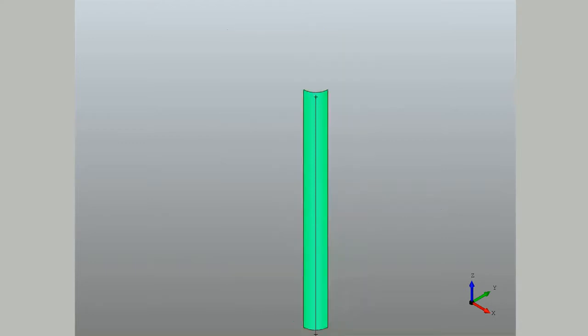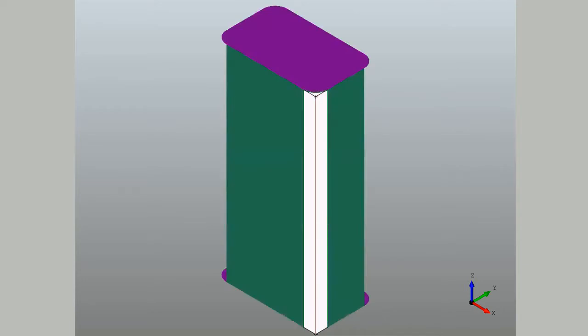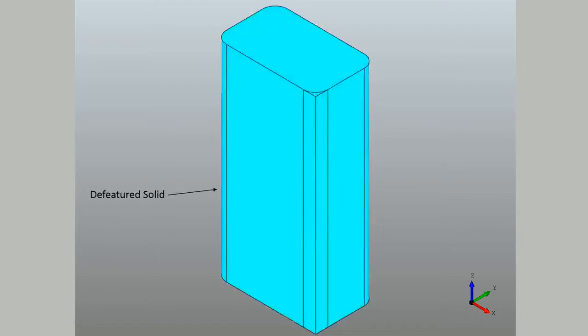Next, the extended faces are created using the corner edge and the neighboring edges. And finally, the shell obtained from the extended faces is used to create the de-featured solid.